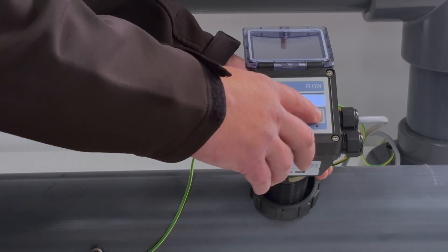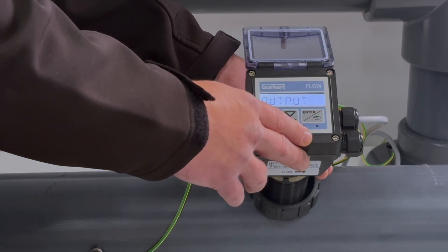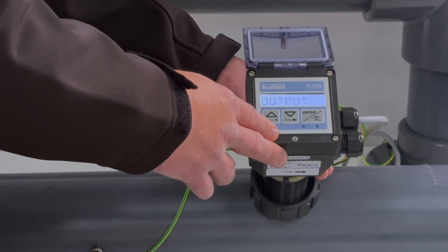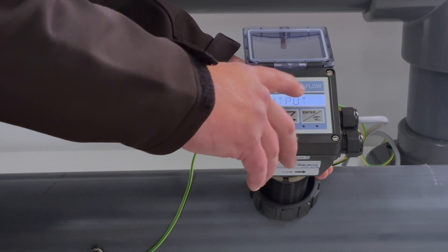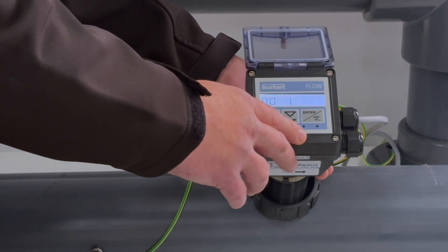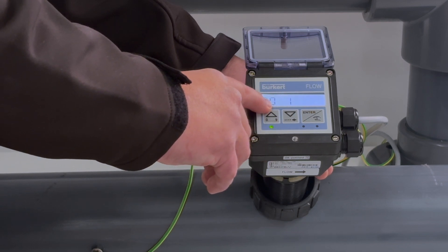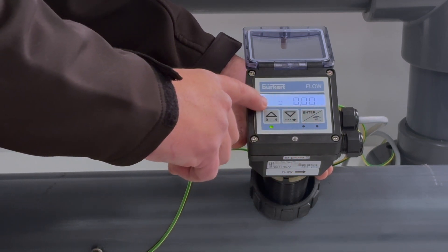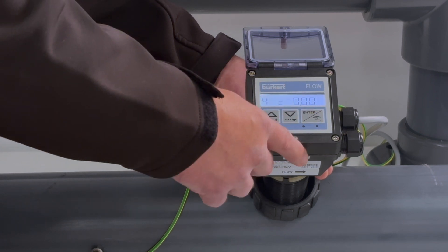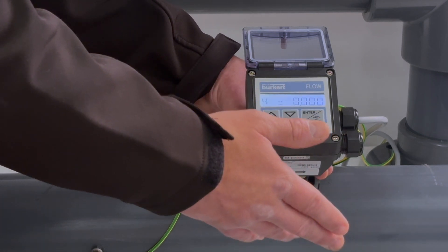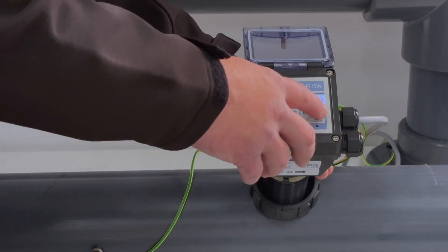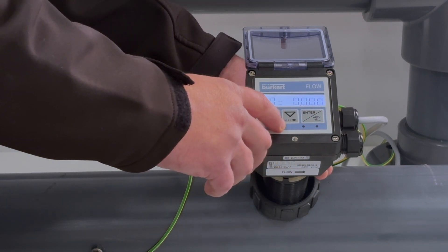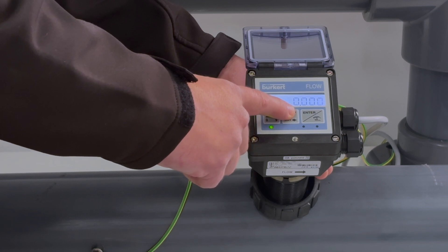I'm going to return back to the main menu and set my outputs. The main two outputs we want to set here are the 4 to 20 and the pulse outputs. Press enter on the outputs menu. My AO or analog output 1 will be my current. My 4 milliamps I'm going to set to 0 liters per minute, which is corresponding to the unit that we set previously.